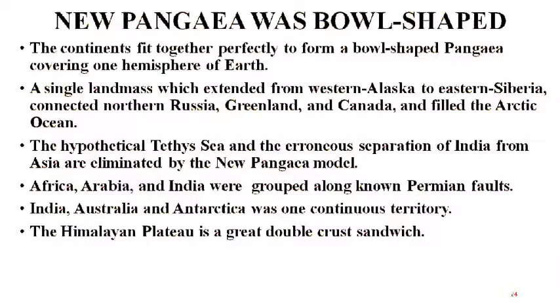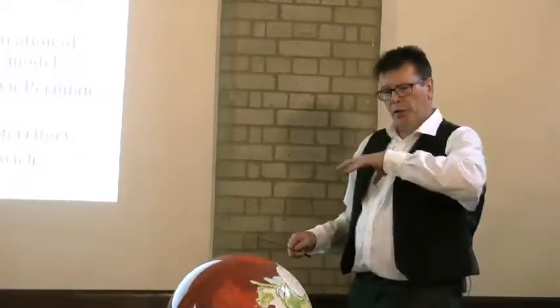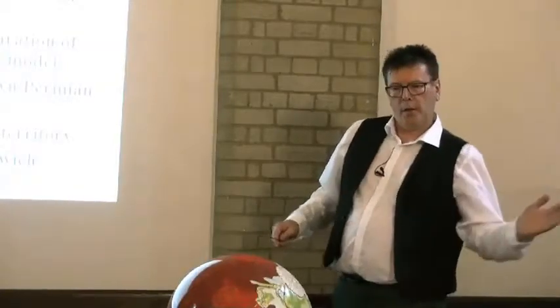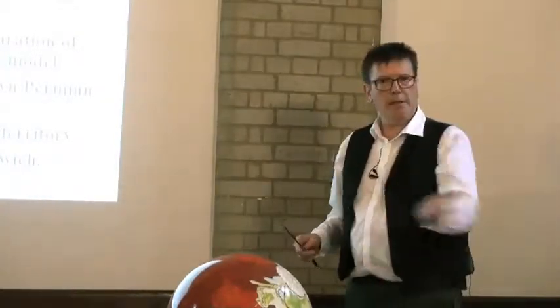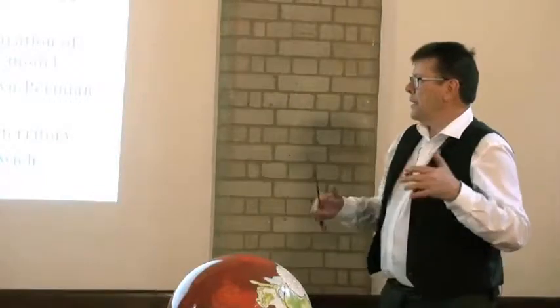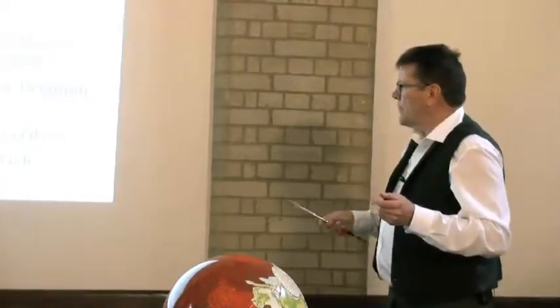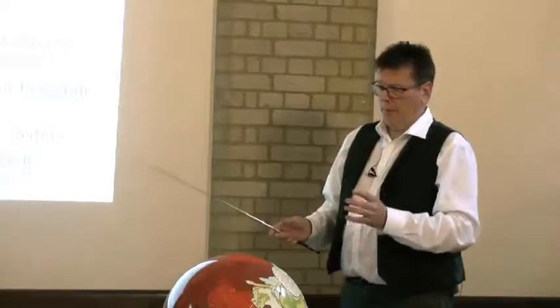The critical idea is that the new Pangaea construction is the shape of a bowl — a hemisphere — and the continents do fit together very well, filling in a lot of gaps. For example, the Arctic Ocean was formed by a chunk of continent actually moving towards Kamchatka and the eastern end of Siberia. The Tethys Sea doesn't exist in this model — meaning India is connected to Asia, and all the fossil information shows that's always been the case. The Himalayas are basically almost like two bits of continent stacked on top of each other, which geological evidence supports.